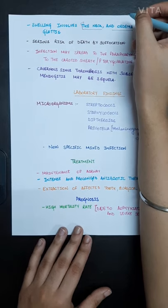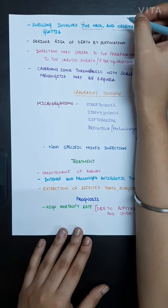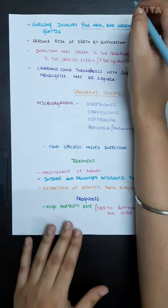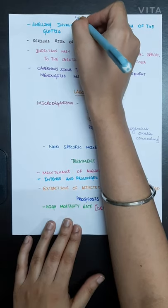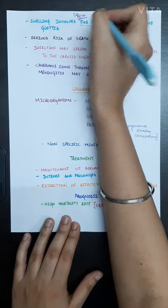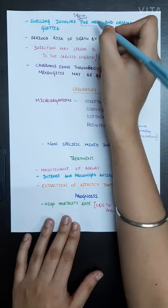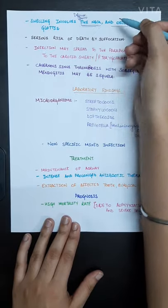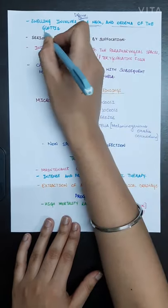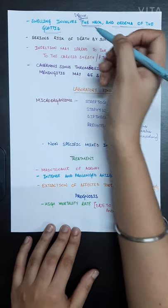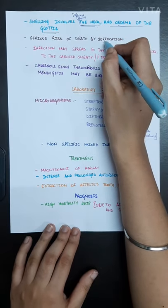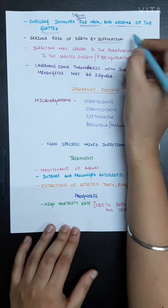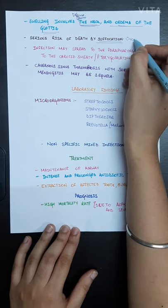As we know, in Ludwig's angina the swelling is a diffuse one, so it will not only involve the submandibular spaces, it may also involve the neck and may also cause edema of the glottis. There is a serious risk of death by suffocation or choking because of this swelling.